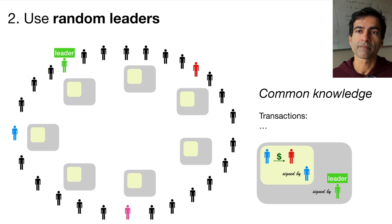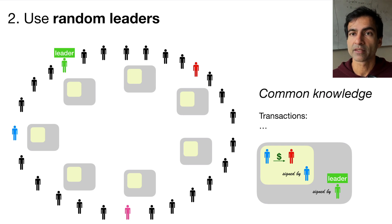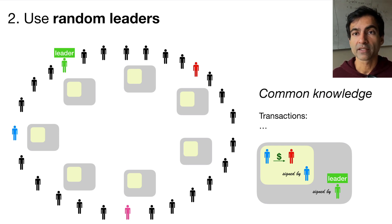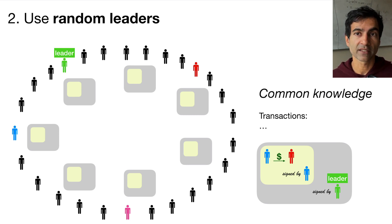Once that happens, we'll again pick a new leader who will decide on the next transaction that goes onto the common knowledge. In this way, there's a consensus about what is common knowledge and what transactions are part of it. Eventually, if somebody wants to put a transaction onto the common knowledge, their transaction will be picked by a leader. Having random leaders also has the property that you can't have any single entity controlling the transactions.